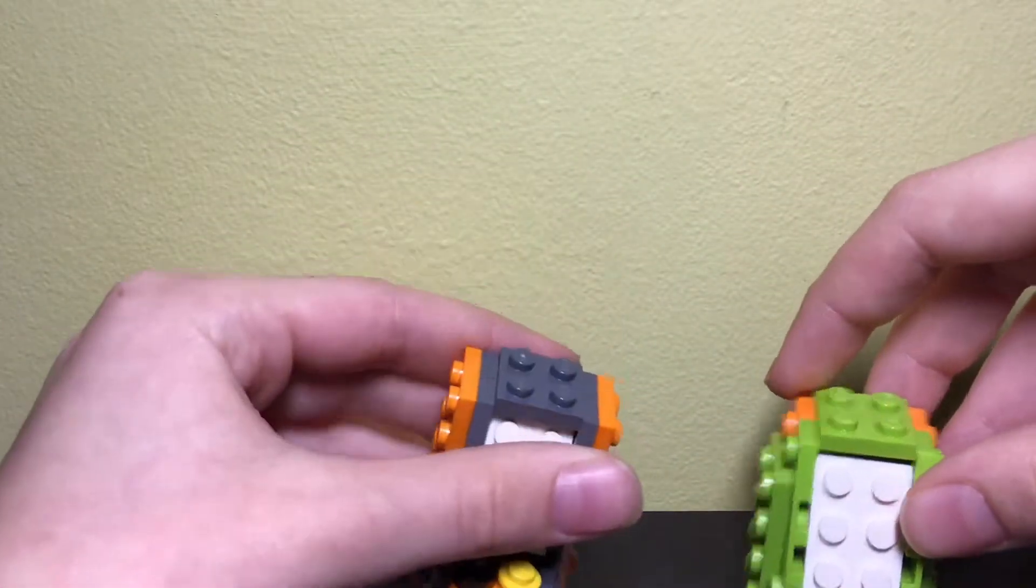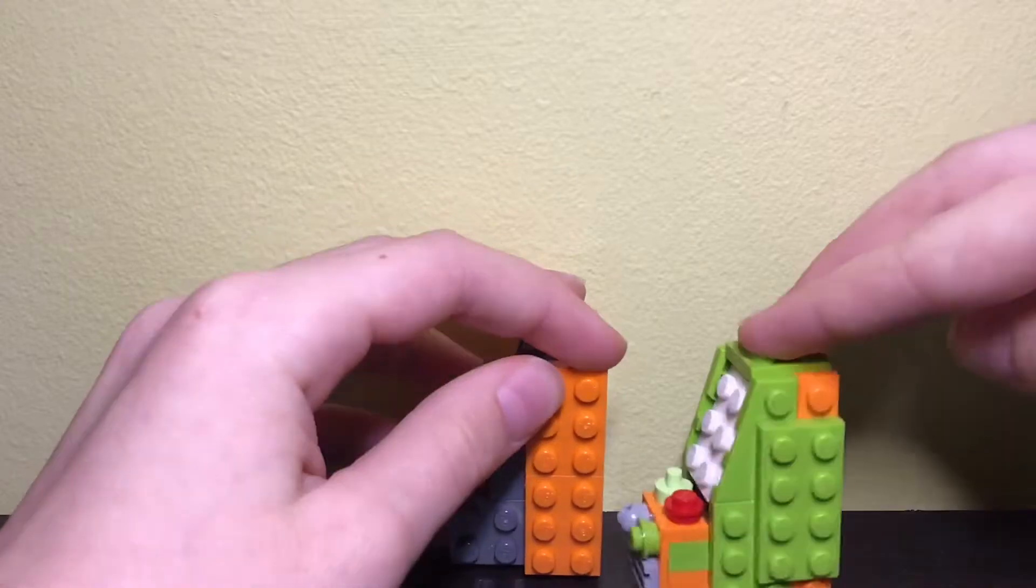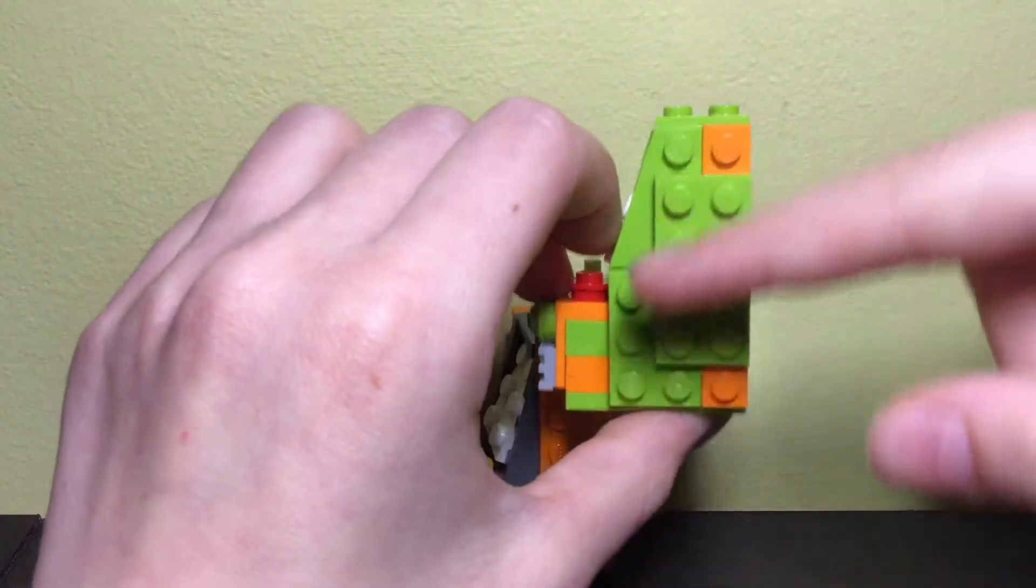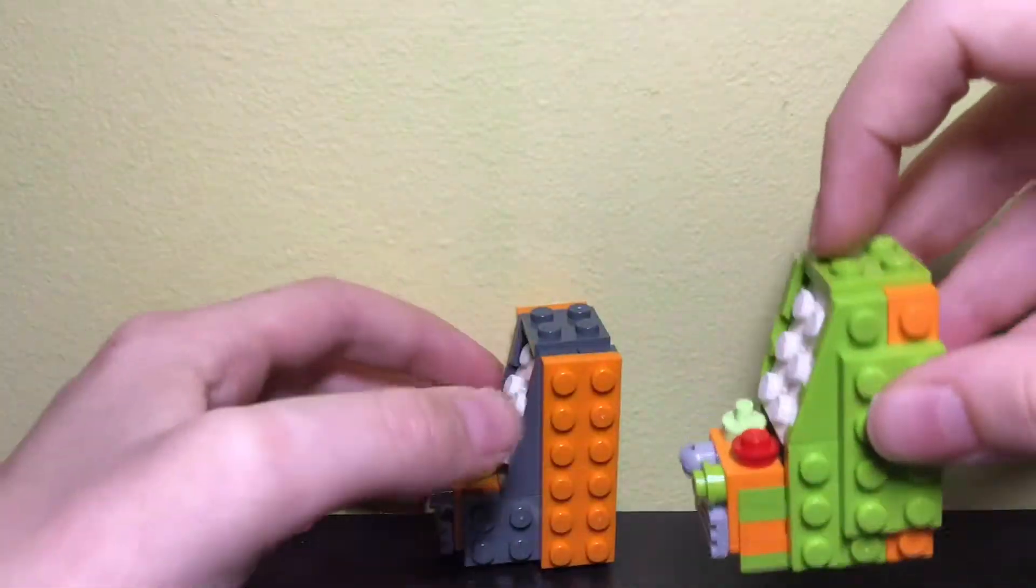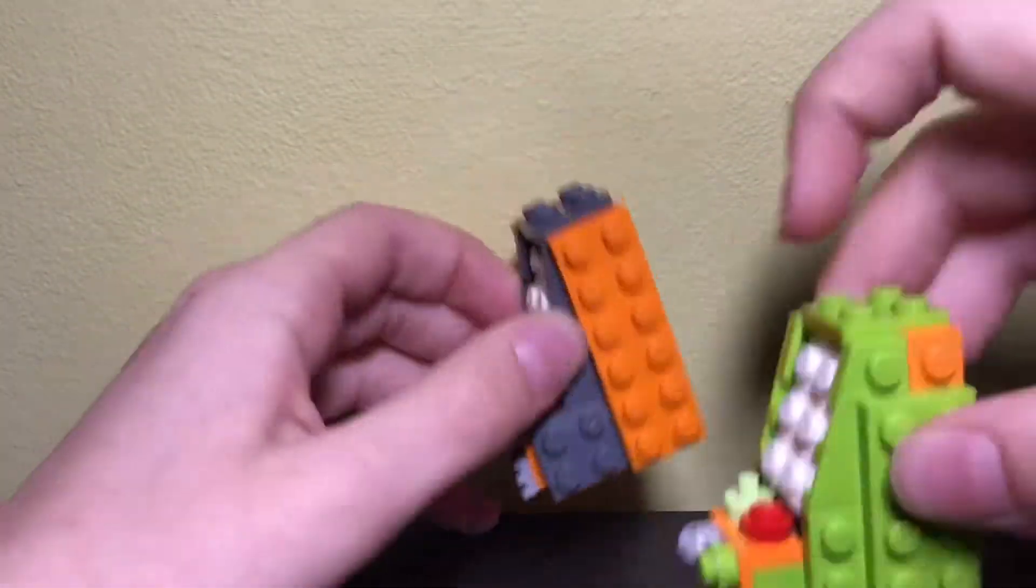This tutorial is about how to make these small arcade machines. We have one in green and one in this orange-gray combination. There's a small difference between them - the sidebar. For this one, the sidebar doesn't extend outward, but for this one it does.